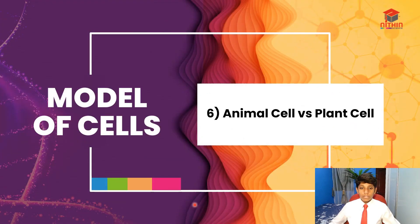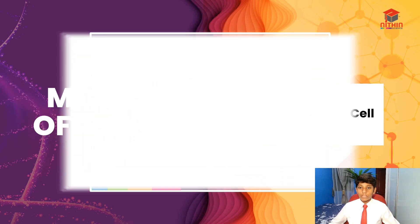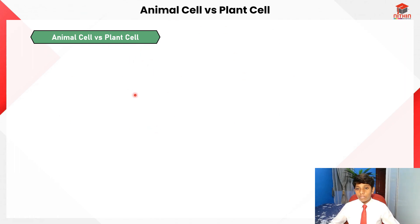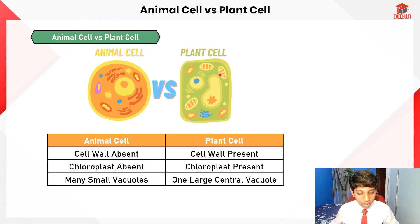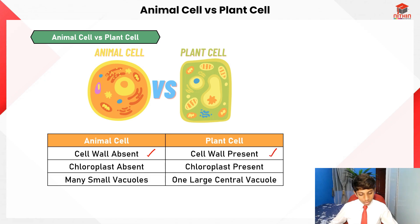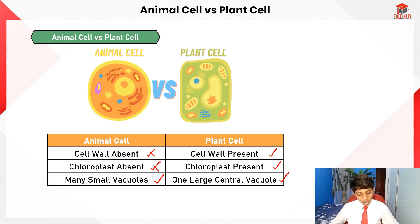For segment six, animal cell versus plant cell differences. Animal cell: cell wall absent, chloroplast absent, numerous small vacuoles. Plant cell: cell wall present, chloroplast present, one large central vacuole. These differences are presented here in a table format to help you visualize them.